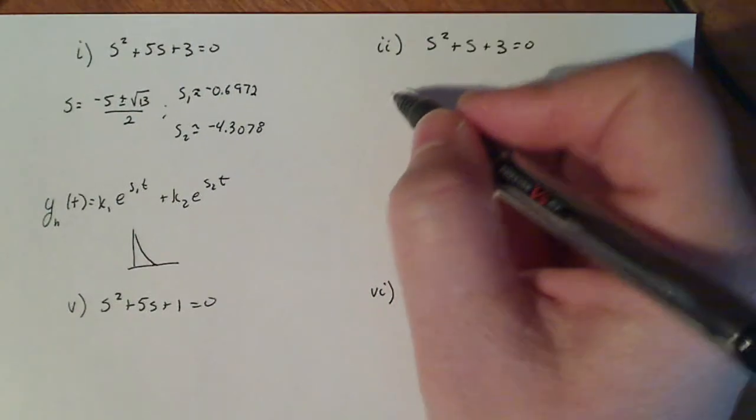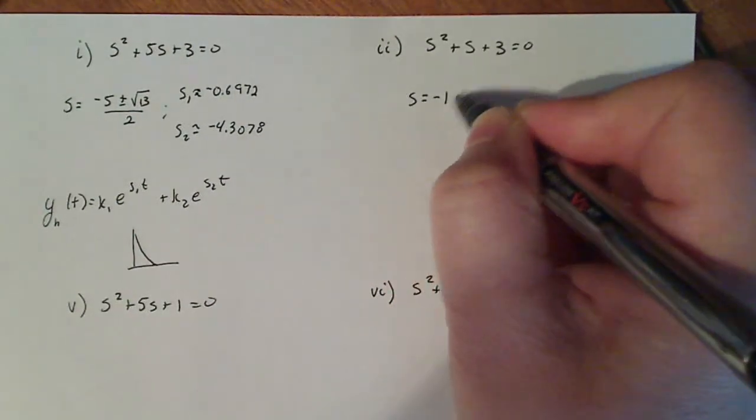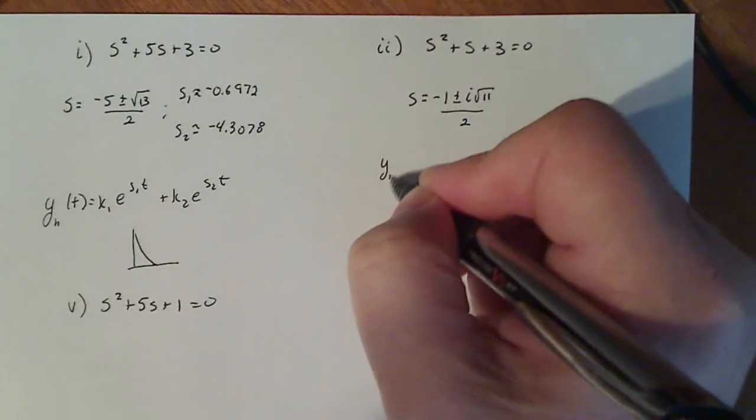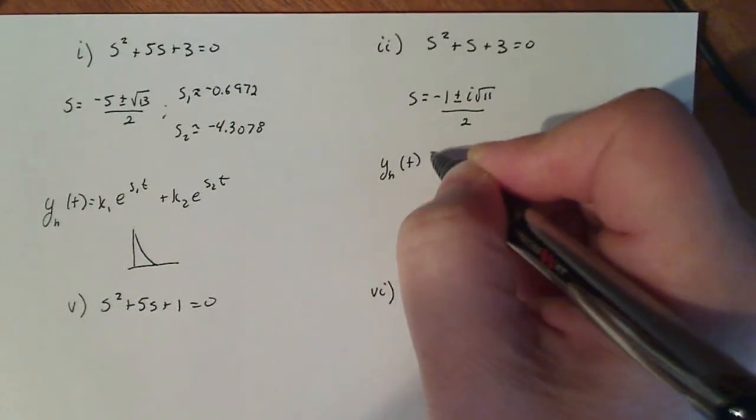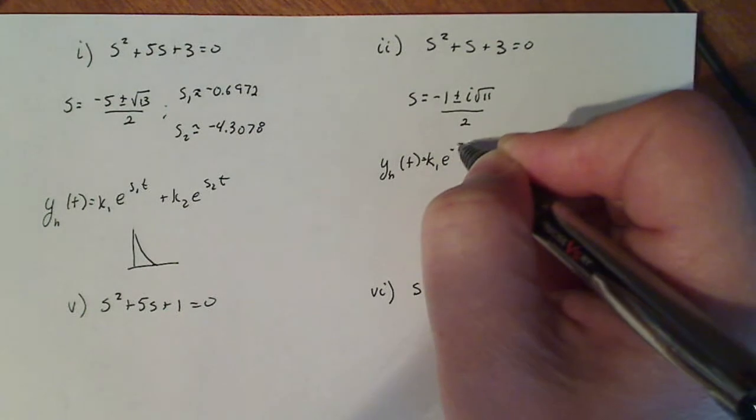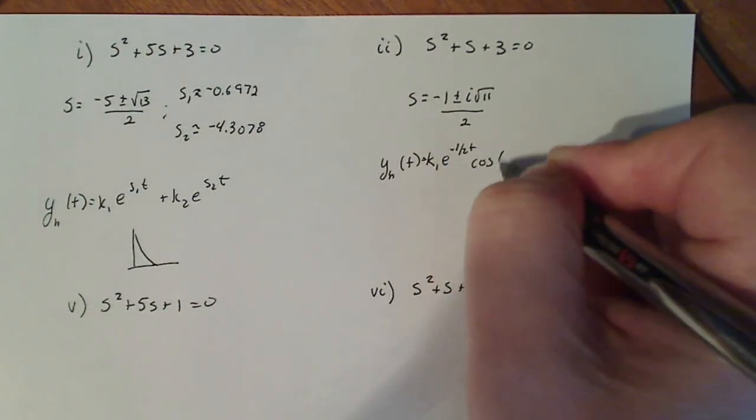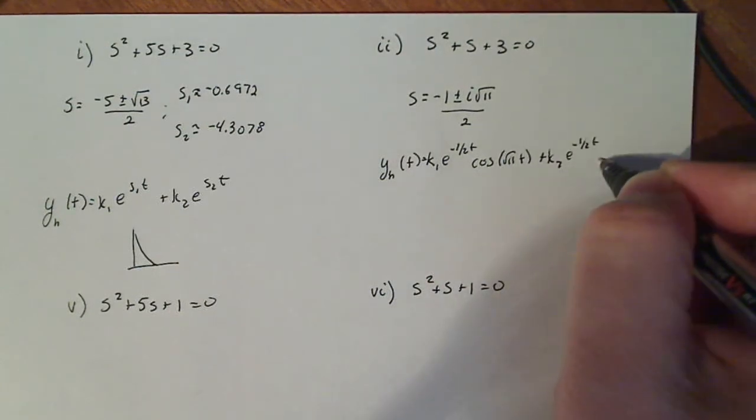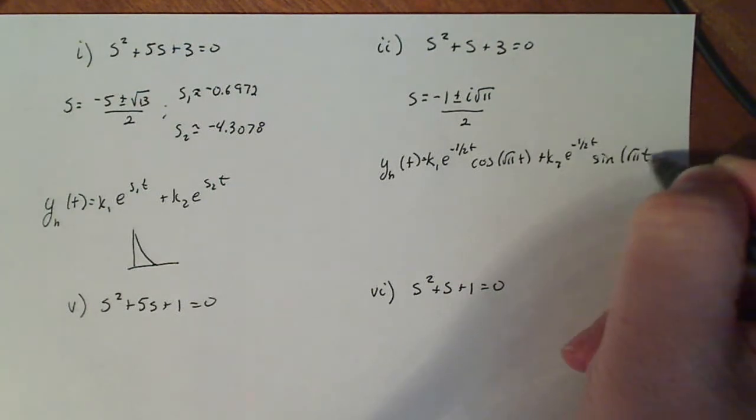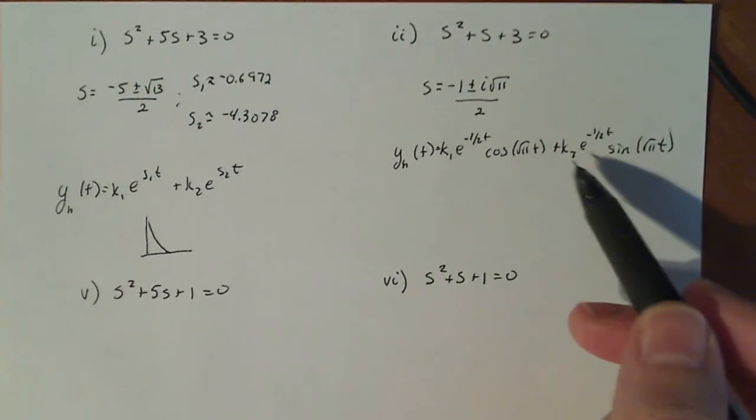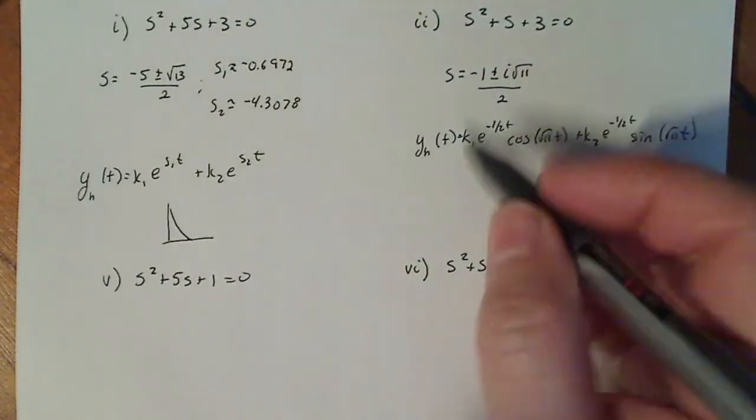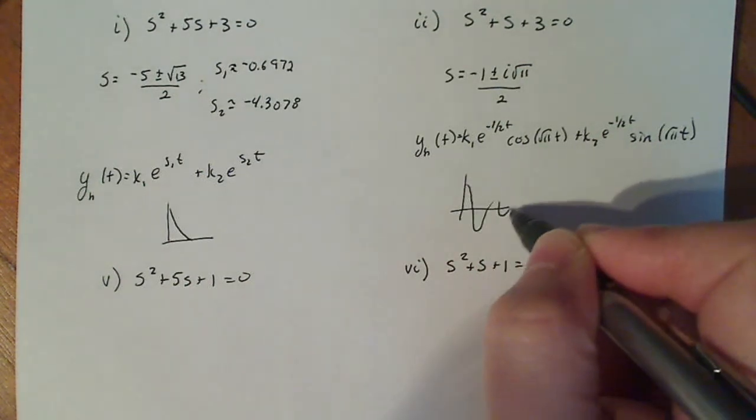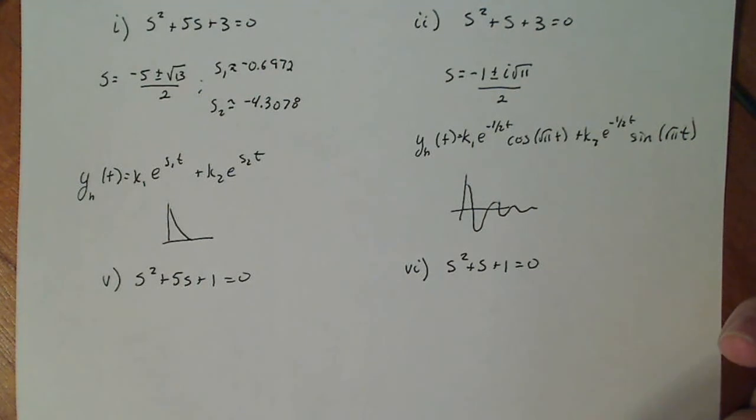Now here, I come up with s = (-1 ± i√11)/2. And then my y_h(t) turns out to be k₁e^(-½t)cos(√11 t) + k₂e^(-½t)sin(√11 t). Now because we have this additional trig functions in here, it's not purely exponential like this guy here. Initially for our forcing function or for our differential equation, the solution is going to have some oscillation happening before it settles down into the forcing function pattern.